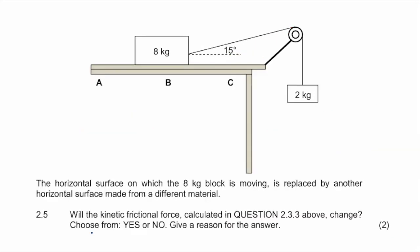In the last question, 2.5, they tell us that the horizontal surface on which the block moves is replaced with something of a different material. They ask whether the kinetic frictional force calculated will change. The answer is definitely yes, because mu_K depends on the surface.